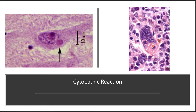Cytopathic or cytoproliferative reaction is usually produced by viruses. The lesions are characterized by cell necrosis or cellular proliferation, usually with sparse inflammatory cells. Some viruses replicate within cells and make viral aggregates visible as inclusion bodies, as shown by the arrow in the left picture, or induce cells to fuse and form multi-nucleated cells called polykaryons, as in cases of measles virus or herpes viruses.